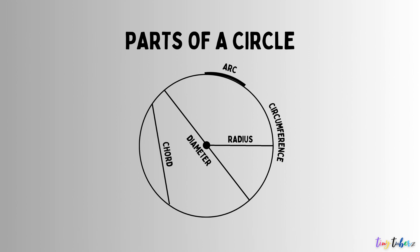Chord. A chord is a line segment that connects two points on the circumference of a circle. It doesn't necessarily pass through the center of the circle.